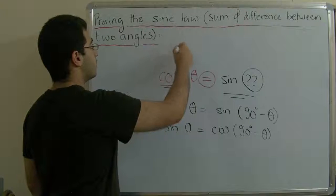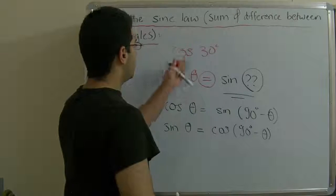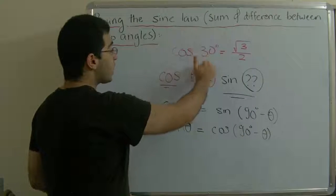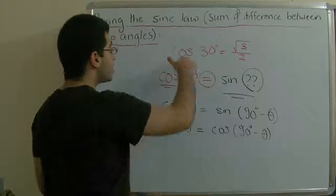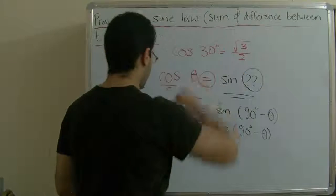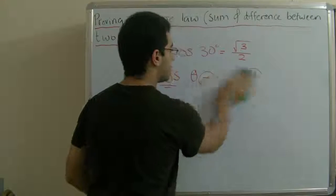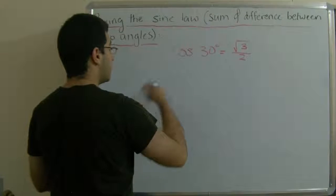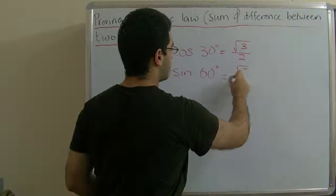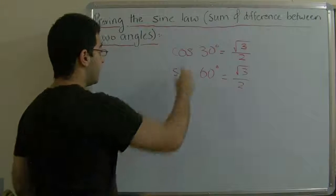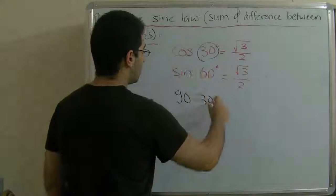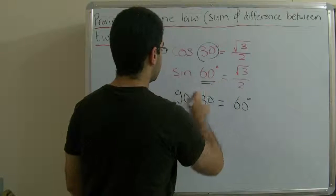For example, if we have cosine 30 degrees, this equals root 3 over 2. Sine of which angle equals root 3 over 2? We notice that sine 60 degrees equals root 3 over 2. If we have 90 degrees minus 30, which is theta, we find that this equals 60 degrees, which is 90 minus theta.